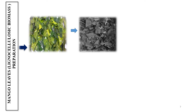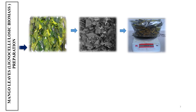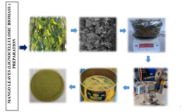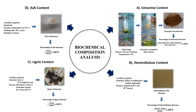This is the mango leaf preparation process. The biomass is collected, then washed and dried, next weighed, and then ground and finely sieved to produce mango leaf powder. After the drying process, the moisture analysis is conducted. Next, biochemical composition analysis is initiated. The components quantified include extractives, hemicellulose, lignin, ash, and cellulose.